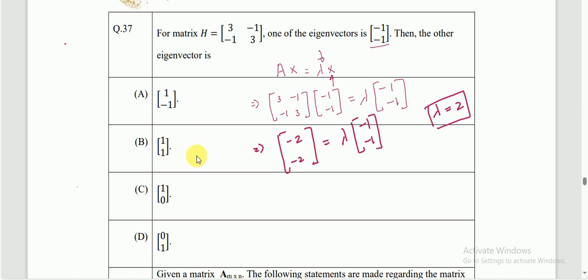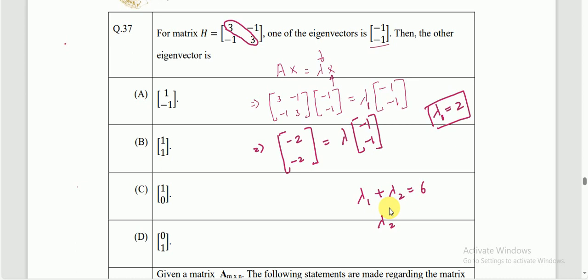Since the trace of a matrix equals the sum of its eigenvalues, and the sum of the diagonal elements of H is 6, we have λ₁ + λ₂ = 6. Since λ₁ = 2, we get λ₂ = 6 - 2 = 4. So the other eigenvalue is 4.